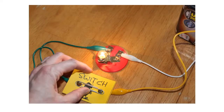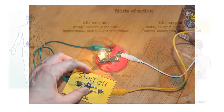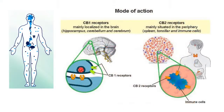You can think of these receptors as equivalent to a light switch in a circuit diagram. Your body has two types of receptors specialized for endocannabinoids. We call them CB1 and CB2. CB1 is on the surface of nerve cells in the brain. CB2 is found mostly on white blood cells, but also in the heart, lung, and blood vessels.